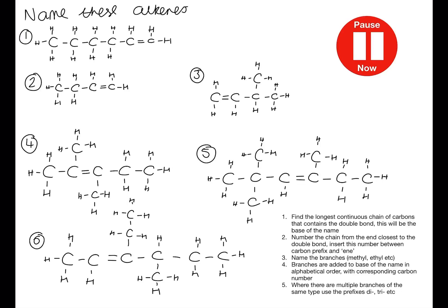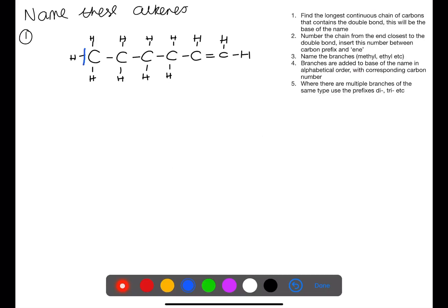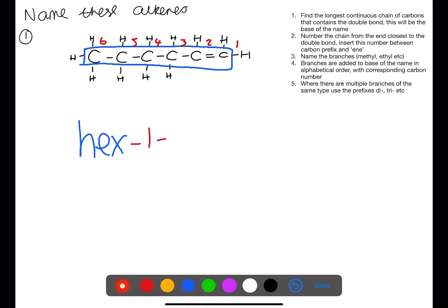Pause the video now and try to name these alkenes. For this first example we have our longest chain of six carbons, and we number from the end closest to the double bond. This gives us hex-1-ene, where the double bond starts on number one. It's important to number from the end closest to the double bond — if we didn't, this would give us a name of hex-5-ene.